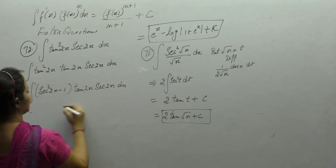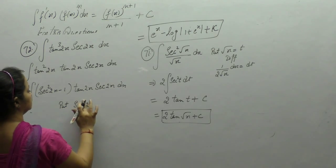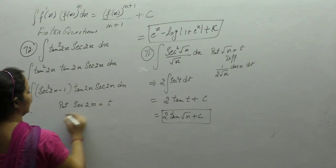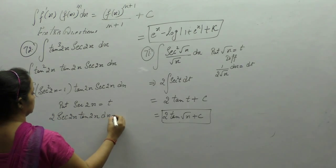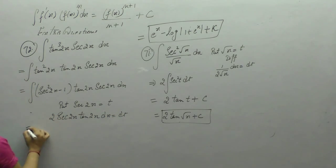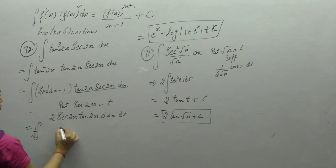Now put sec 2x as t. Derivative of 2x is 2. Sec 2x tan 2x dx is dt upon 2. We have t squared minus 1.